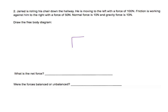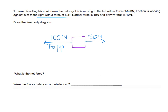We're going to begin with our square, and then go through each step of the problem. He is moving to the left with a force of 100 Newtons, so we're going to draw our vector to the left and label it 100 Newtons. Again, this is our applied force — it's the motion that's happening. Next, friction is working against him to the right with a force of 50 Newtons, so we're going to draw an arrow to the right, 50 Newtons, and label this with friction.